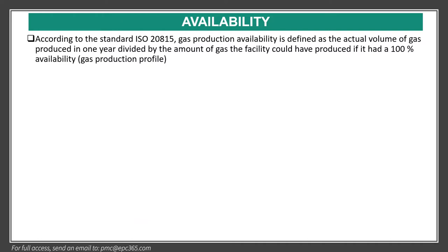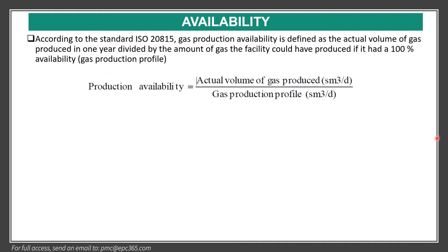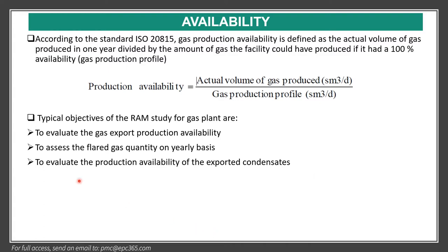Availability based on the functional block diagram can be calculated as per ISO 2818. The gas production availability is defined as the actual volume of gas production in one year divided by the amount the facility could have produced at 100% availability. Based on this formula, the consultant calculates availability for gas, condensate, and also flare gas quantity on a yearly basis.